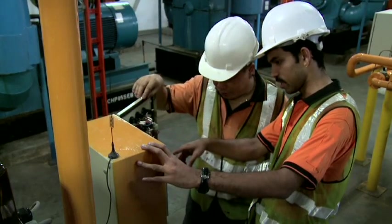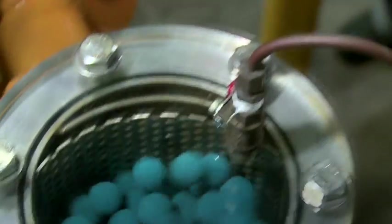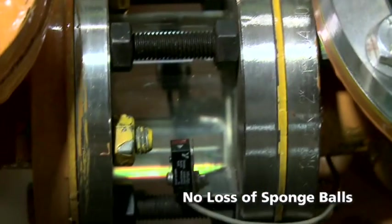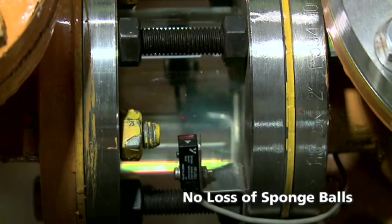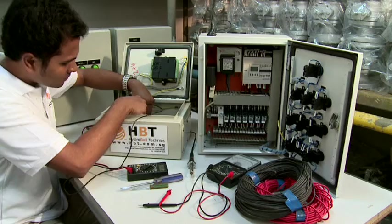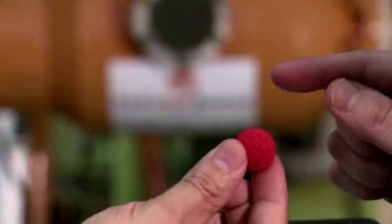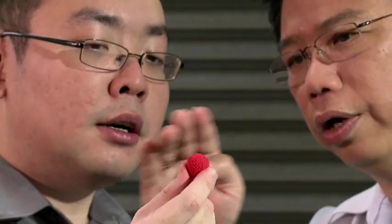With its simple but innovative design, the non-powered Hydroball system is able to guarantee no loss of sponge balls during the tube cleaning process. The non-powered Hydroball system shows that with the right skills and resources, combined with good quality, value and service, local companies are capable of developing world-class products.